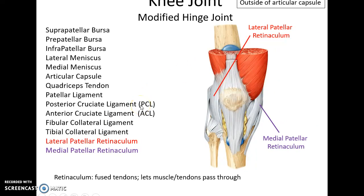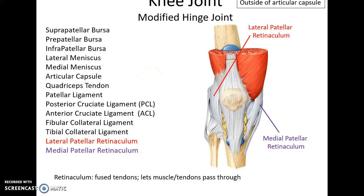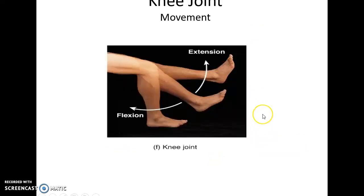Outside the articular capsule you also have the lateral patellar retinaculum and the medial patellar retinaculum — basically fancy ligaments. Movements at the knee joint are flexion and extension.